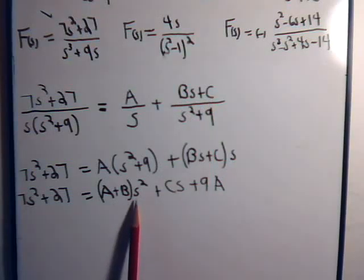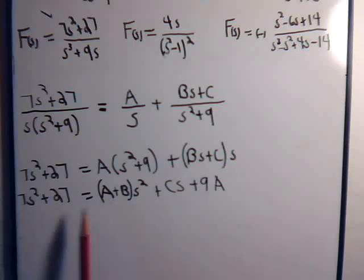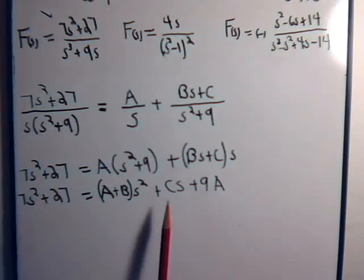And here, on this side of the equation, we have A plus B times s squared. Over here we have 7 times s squared. So we know A plus B has to equal 7. There is no s term. That tells us that C is 0.